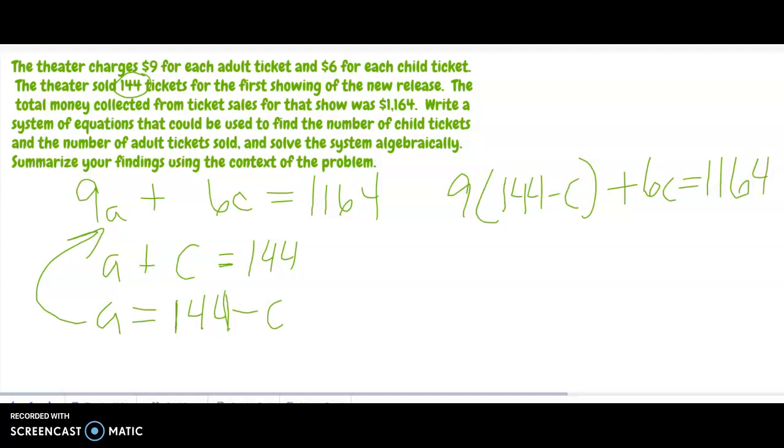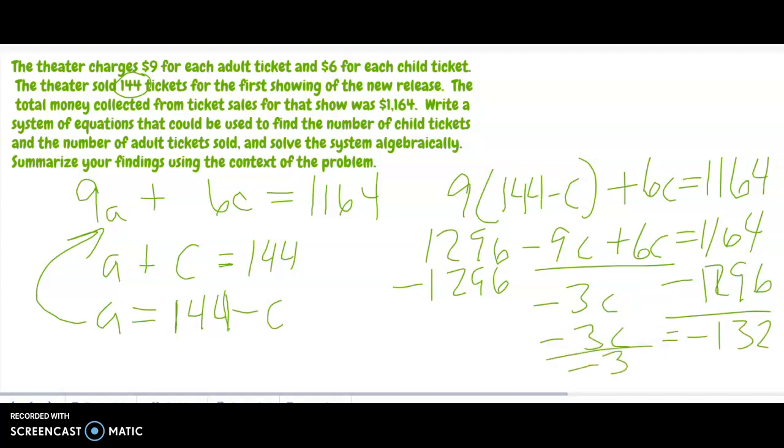And if we do that, 9 times 144 is 1296 minus 9c plus 6c equals 1164. Let's combine these terms right here, that's going to be negative 3c. Let's subtract this from this side and 1164 minus 1296 equals negative 132.